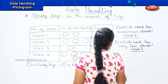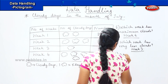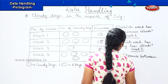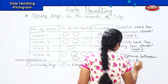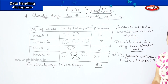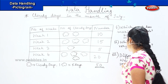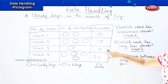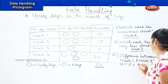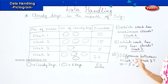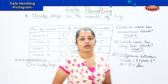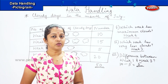Your next question is: what is the difference between week one and week three? Week one has ten cloudy days and week three has five cloudy days. So the difference is ten minus five, which is five. You have a difference of five clouds between week one and week three. Is this pattern clear, children? Are you clear with the pictogram format?